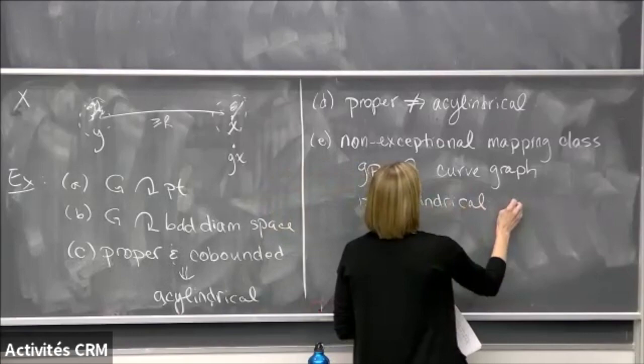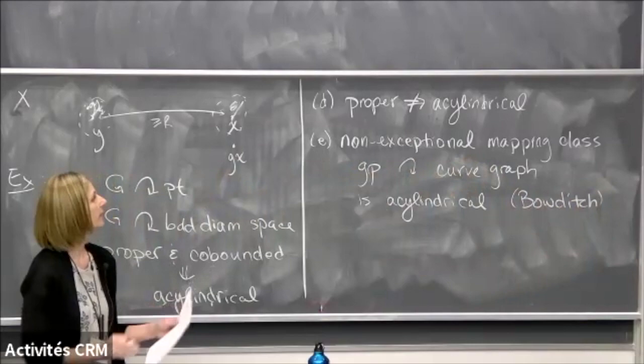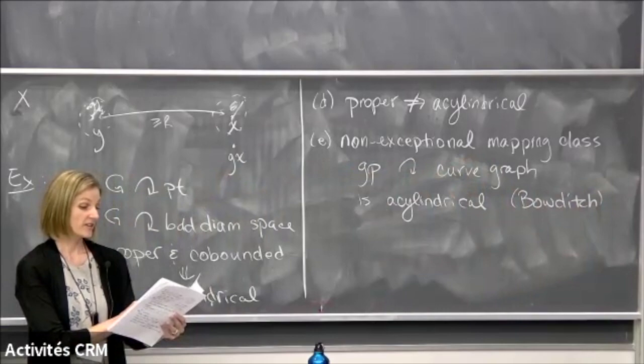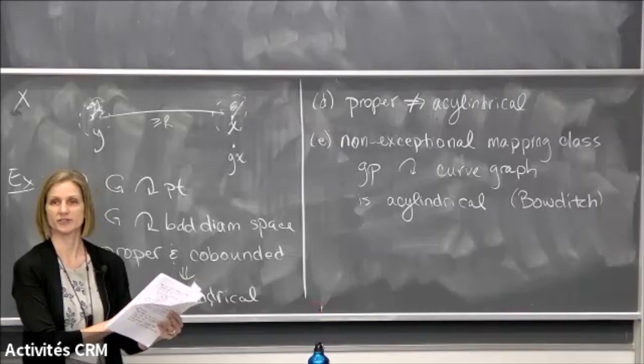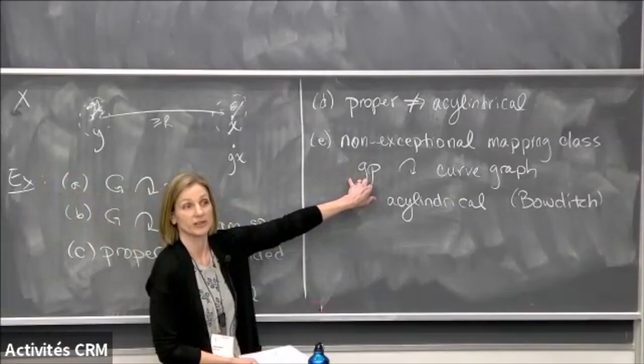This result is due to Bowditch, and in fact this formulation of acylindricity was introduced by Bowditch precisely to describe the action of the mapping class group on the curve graph. Almost every mapping class group is non-exceptional. The exceptional ones are for surfaces of genus g with p punctures where there is no genus and 0, 1, 2, or 3 punctures — essentially the small surfaces. As soon as your surface has sufficient complexity, the mapping class group is non-exceptional.